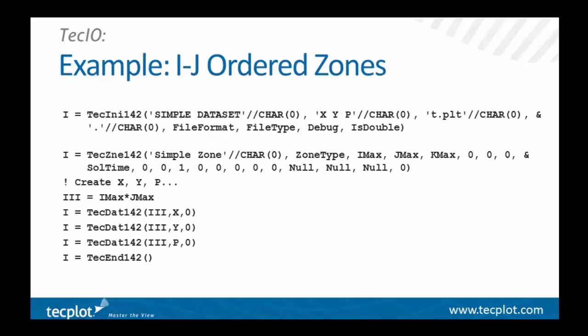Here's a simple example to create a data file with a single IJ-ordered (2D structured) zone. This is a Fortran example; the next one will be in C. We call TechINI and pass it the title of the data set — note that for each character string we append a null character to make it C-friendly — then a list of variables and the file name. The next parameter is the temporary directory; normally dot is fine, but if you have disk space issues you may want to dump temporary files elsewhere. That's relevant really only if you're creating PLT files. For SZPLT, all the data remains in RAM allocated by the TechIO library until you actually go to write the file. File format is an integer parameter specifying PLT or SZPLT.